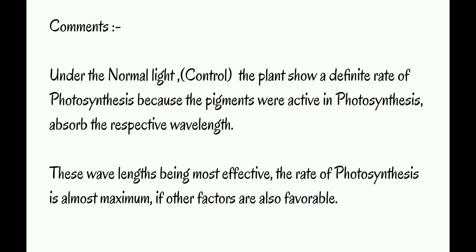Comments: Under the normal light, i.e., control, the plant shows a definite rate of photosynthesis because the pigments active in photosynthesis absorb the respective wavelength. This wavelength being most effective, the rate of photosynthesis is almost maximum if other factors are also favorable.